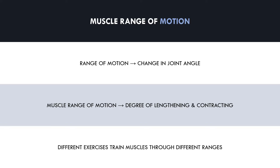Different exercises may take the same muscle through different ranges of motion, even if both exercises are performed with what is considered full range. For example, a narrow grip pull-up takes the lats through a greater range of motion than a wide grip pull-up, even if both exercises are performed from a dead hang to the chin above the bar.